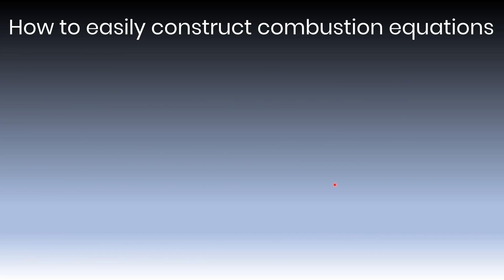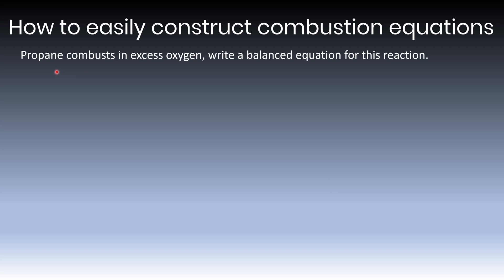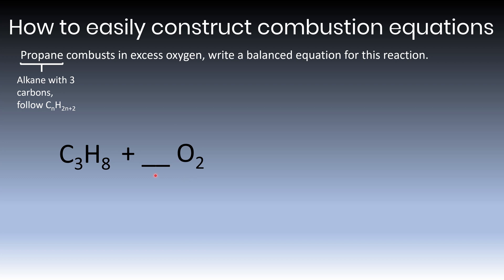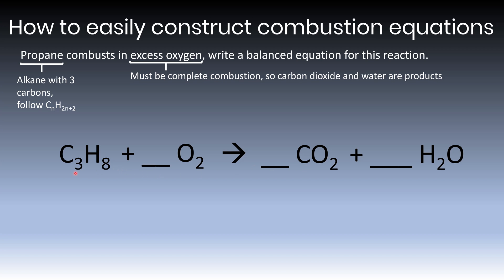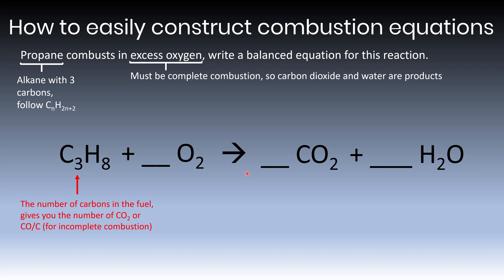Now let's look at how to construct a balanced symbol equation for any combustion reaction. Example: propane combusts in excess oxygen. Propane is an alkane (name ends in -ane) with three carbons (prefix 'prop'), so its formula is C₃H₈ following CₙH₂ₙ₊₂. It reacts with O₂, and because it's excess oxygen this is complete combustion, so products are CO₂ and H₂O. The number of carbons in the fuel gives the number of CO₂s — three carbons gives three CO₂. Halve the number of hydrogens to get the number of waters — half of eight is four H₂O.